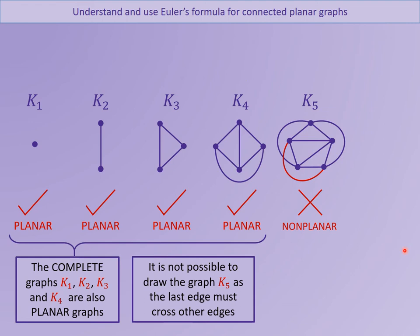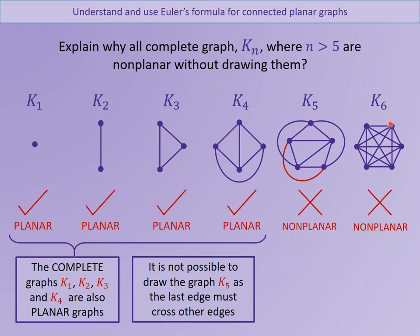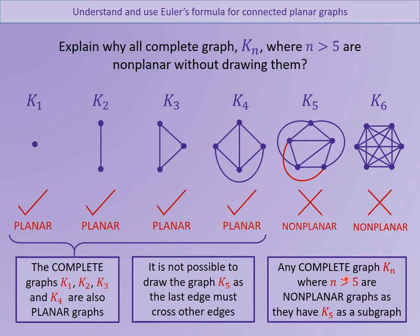I'd like you to explain why no other complete graphs beyond k5 are planar. If you know that k5 is definitely not planar, why is k6 not planar? Why is k7, why is k20 not planar? The problem with k6 is that if you try to draw it and remove or ignore one of the points, what you'd be left with is a k5 graph. Since k5 is not planar, k6 is definitely non-planar as well, because it contains k5 within it. So any complete graph after k5 is non-planar, because it must contain a k5 graph.